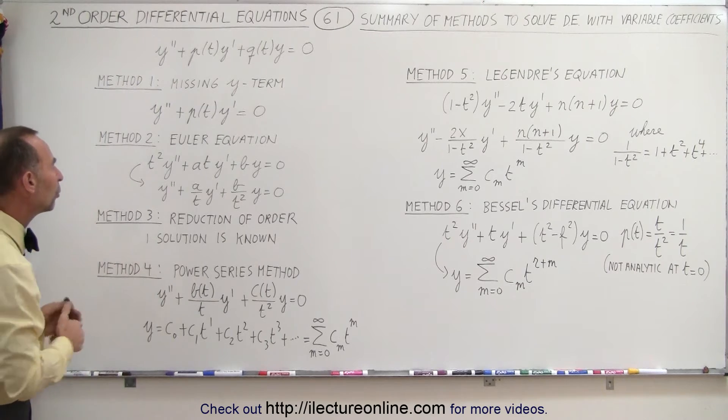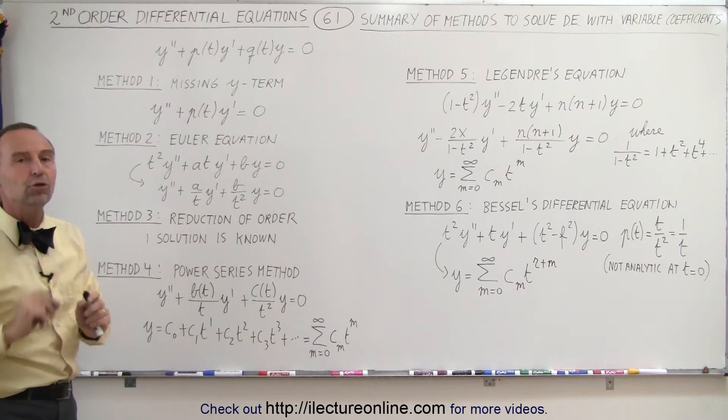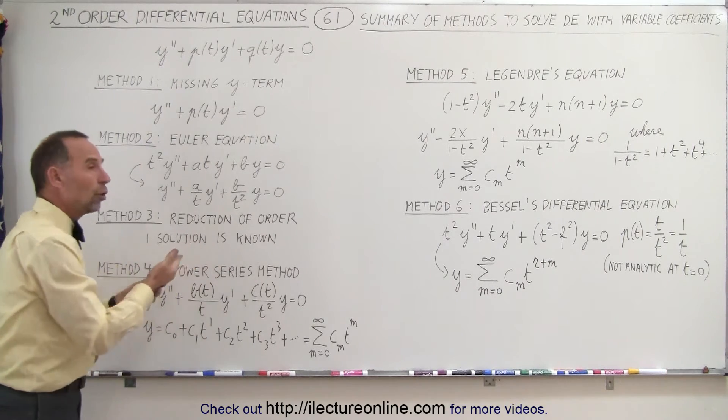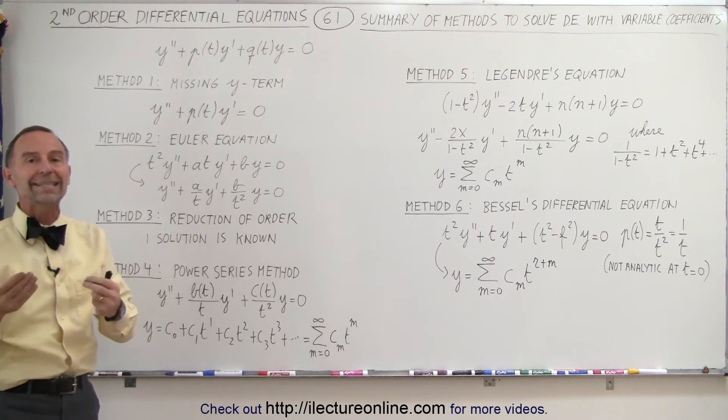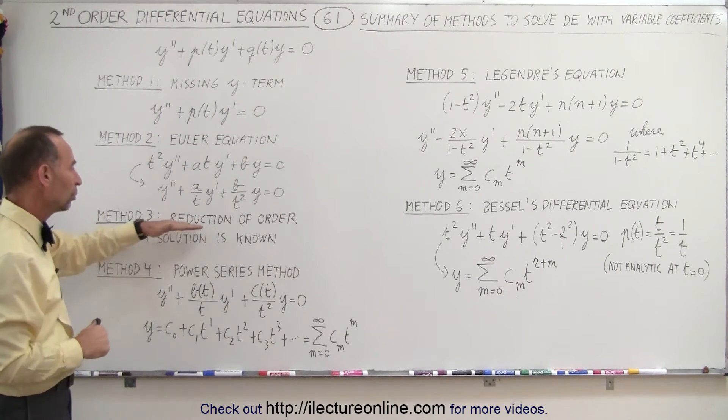Method three is what we call reduction of order. Sometimes we already know one of the two solutions, and if one of the solutions is known, we simply have to then try to find the second solution, and there's a special technique to do so. That's called reduction of order.